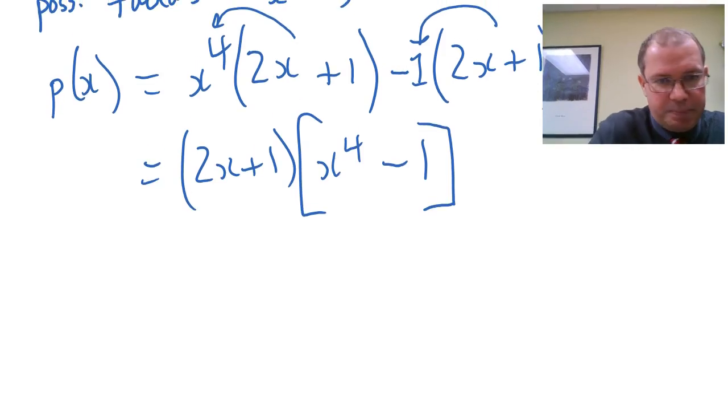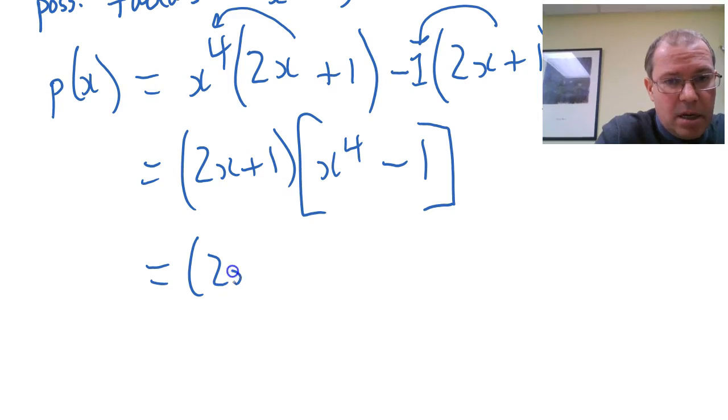So now we can go further. Now x to the 4 minus 1 is a quadratic in disguise. I did another video about that. It's the difference of two squares.